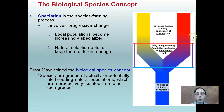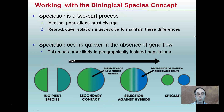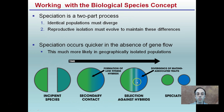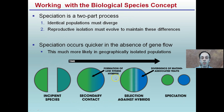This separation can happen in two different forms. It is a two-part process: one, identical populations must diverge; and two, reproductive isolation must evolve to maintain these differences. Speciation occurs quicker in the absence of gene flow, which is much more likely in geographically isolated populations. We have the formation of low-fitness hybrids, selection against those hybrids, and over time we get a clear and distinctive green and blue population. This hybrid intermediate was just not fit for the particular environmental conditions, and speciation occurred causing a distinctive green and blue species to develop.